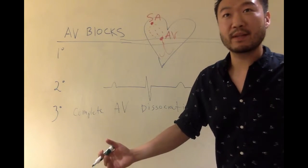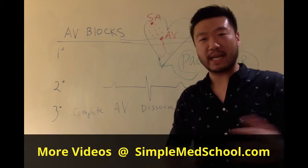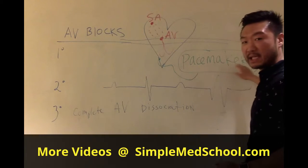What's the treatment? So what is a treatment for third-degree AV block? Like I said, it's the most dangerous, it's the most serious. So what we use is a pacemaker.